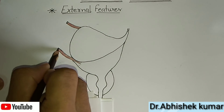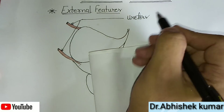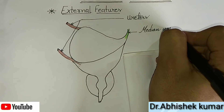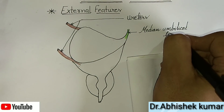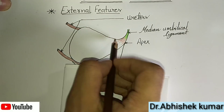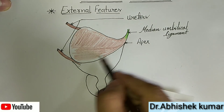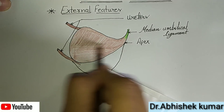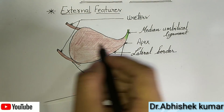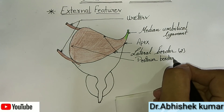Two ureters are labeled on both sides. The median umbilical ligament is shown here — the apex is connected to the umbilicus by the median umbilical ligament, which represents the obliterated embryonic urachus. We can also see two lateral borders, one posterior border, and one anterior border.